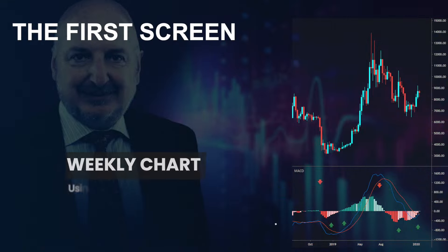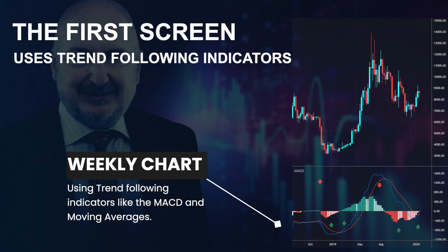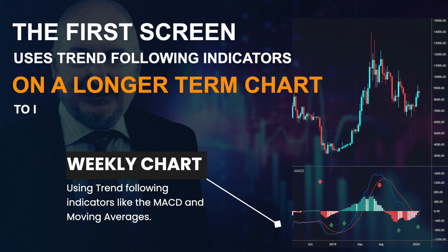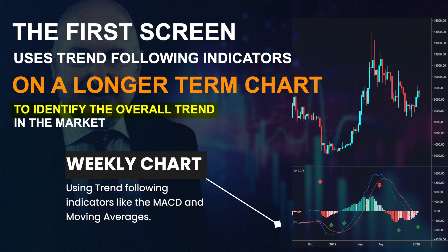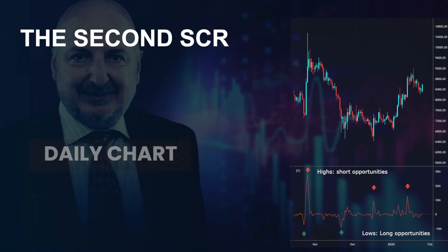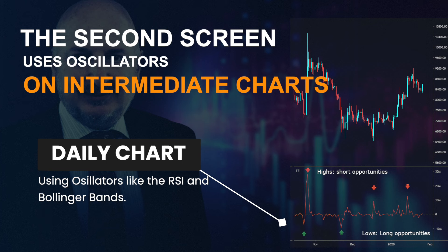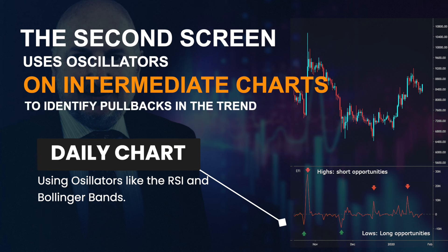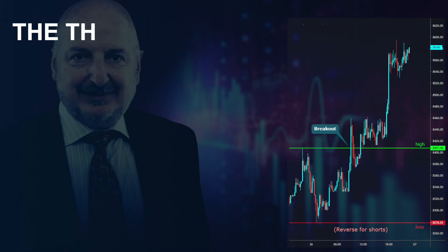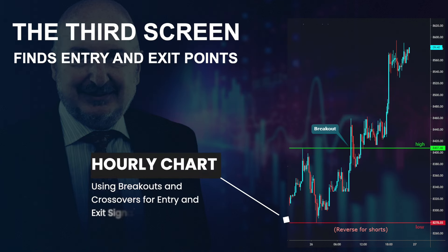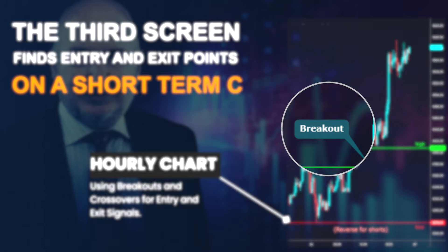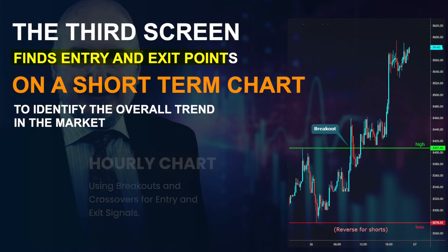The first screen uses trend-following indicators on a long-term chart, and that's going to help us identify the overall trend in the market at that time. The second screen uses oscillators on an intermediate or medium-term chart, and that's going to help us find potential trading opportunities within that overall trend. The third screen is on the shortest time frame chart, and that's going to help us find our entry and exit points to the T.